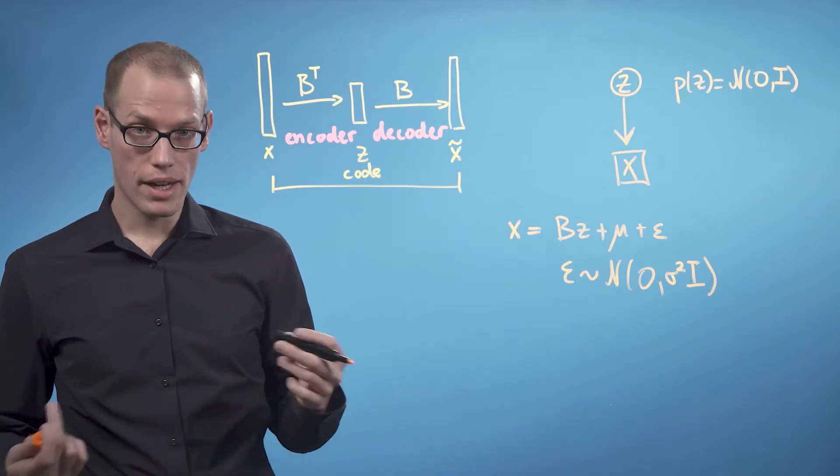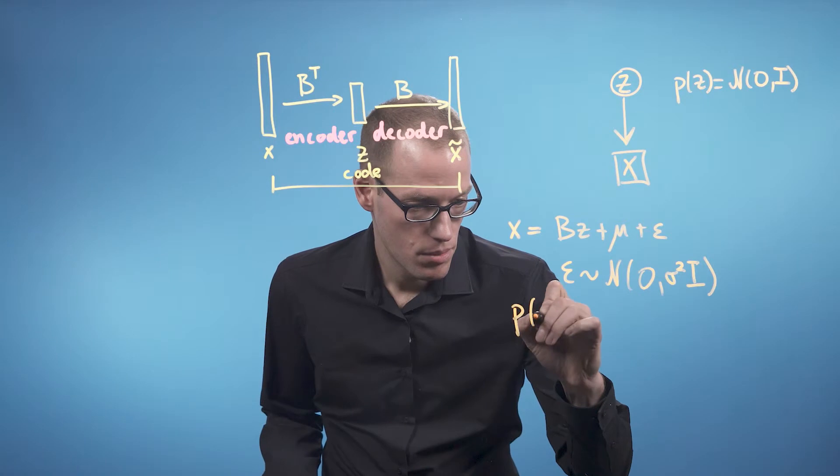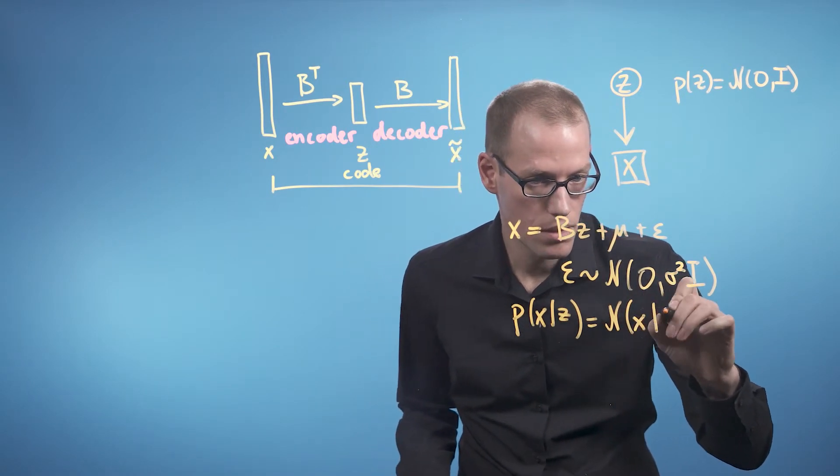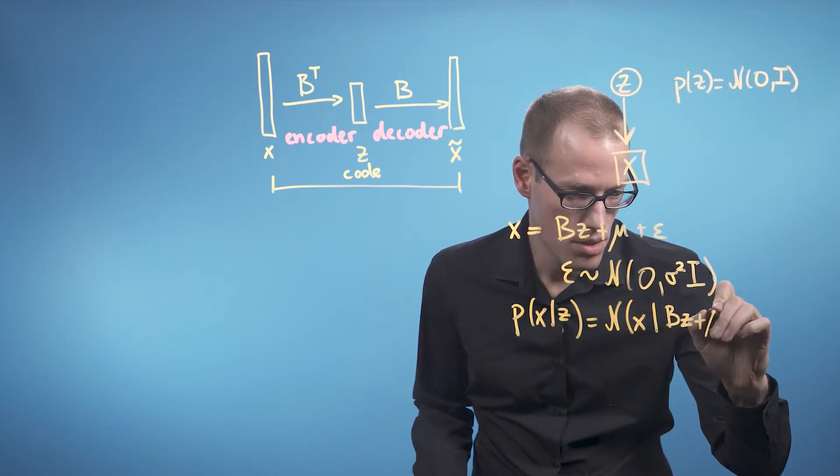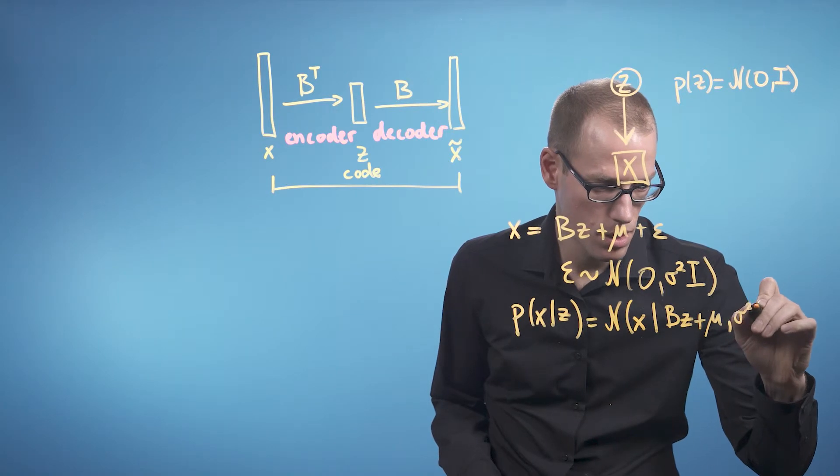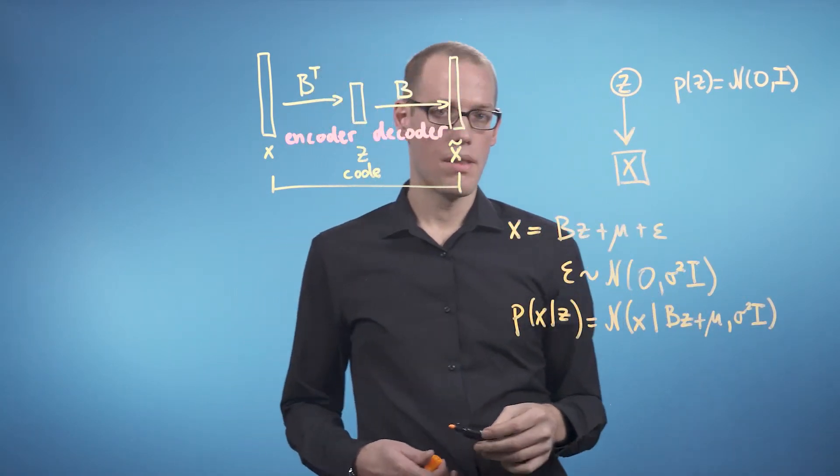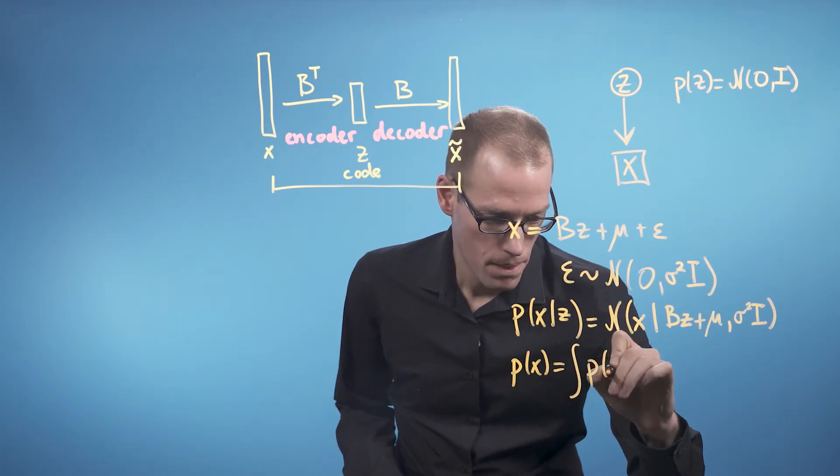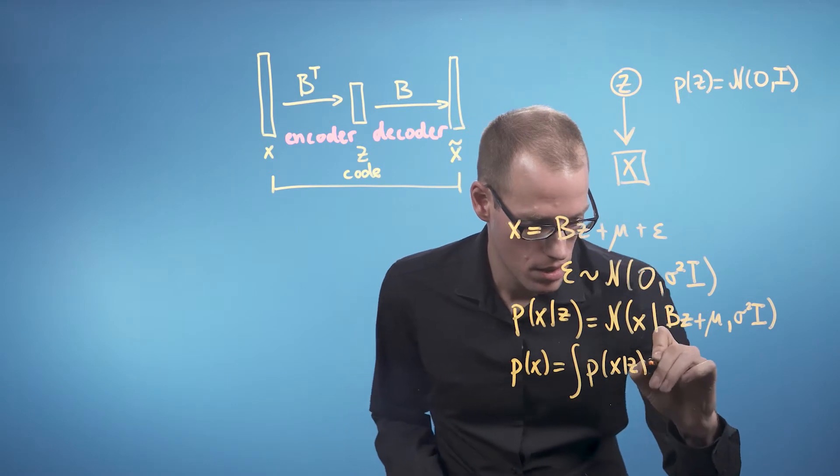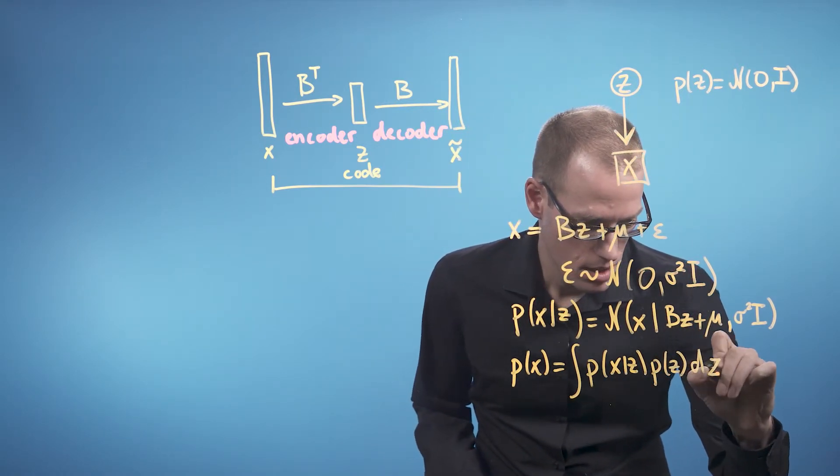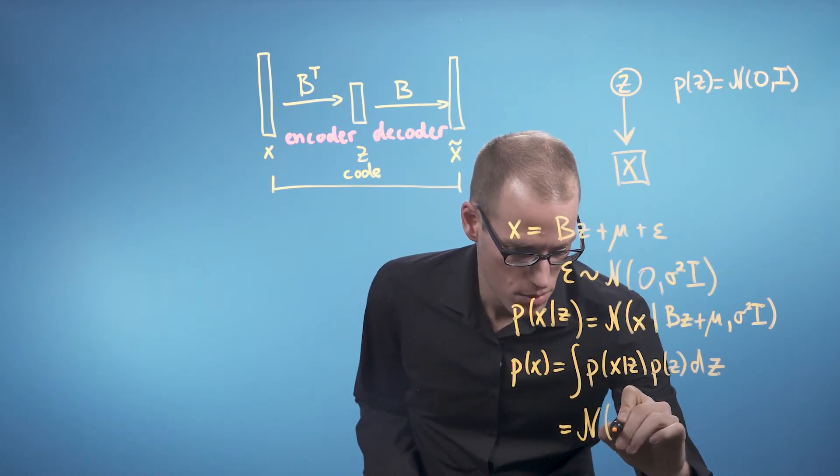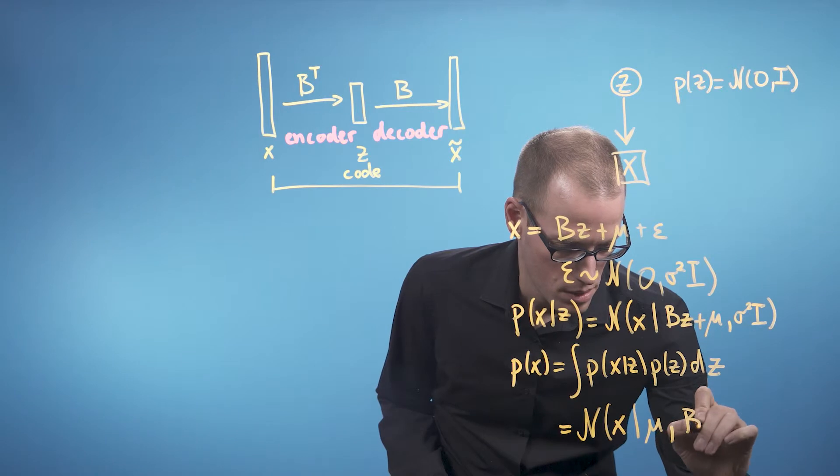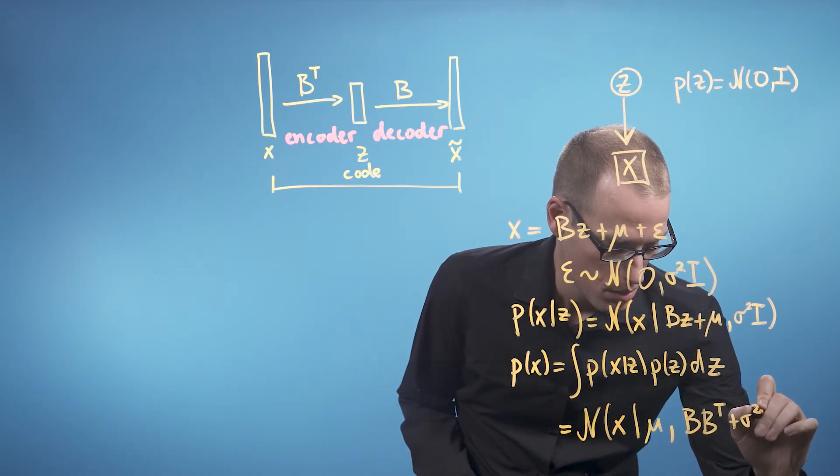We can now write down the likelihood of this model. So the likelihood is P of X given Z, and that is a Gaussian distribution in X with mean BZ plus mu and covariance matrix sigma squared I. And we can also compute the marginal likelihood as P of X is the integral of P of X given Z times the distribution on Z, dz. And that turns out to be a Gaussian distribution in X with mean mu and with covariance matrix B times B transpose plus sigma squared I.